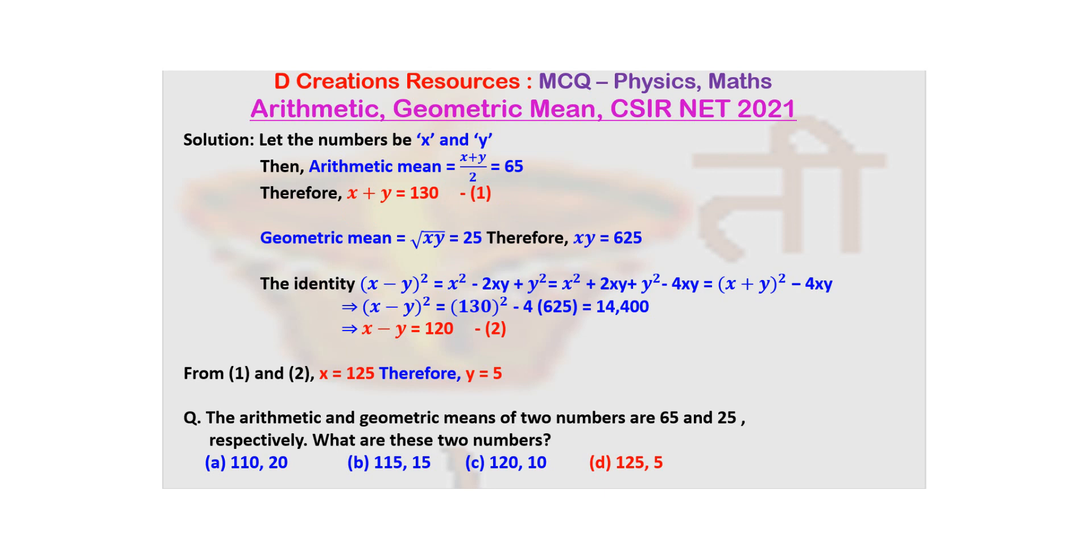Now when you revisit the question and the options, you can see that 125 and 5 is option D. So the correct answer is option D: 125, 5. You can see it was such a simple question involving algebra which you have been doing since your school days. If you get such questions, you should solve them quickly and save your time. Thanks.